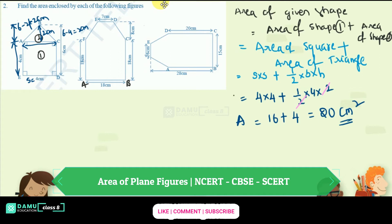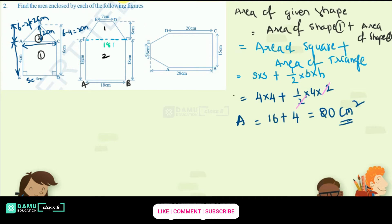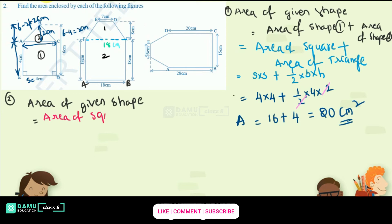For the next figure, the vertices are labeled A, B, C, D, E, F. We can divide this shape into two parts: one is a square and the other is a trapezium. Let's label them as shape 1 and shape 2 — shape 1 is the trapezium and shape 2 is the square. The area of the given shape will be equal to area of square plus area of trapezium.